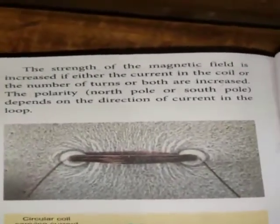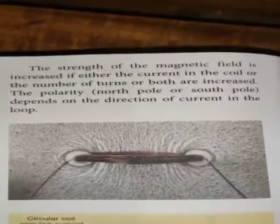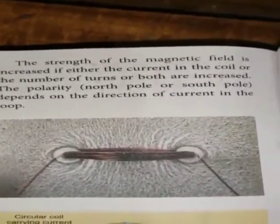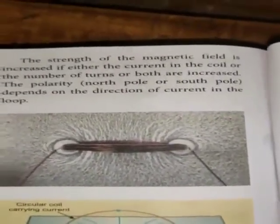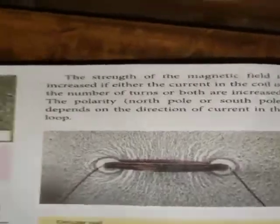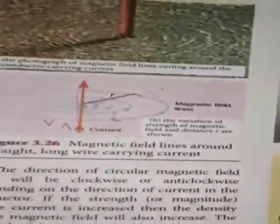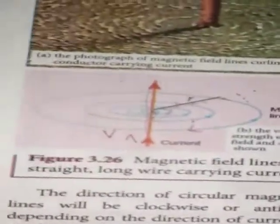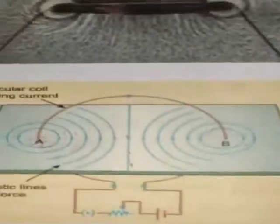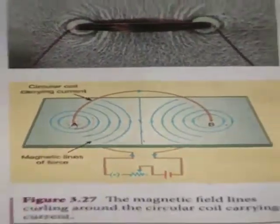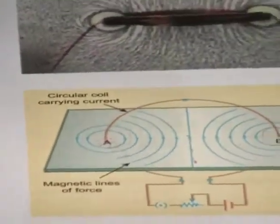The polarity depends on the direction of the current in the loop. There will be a north pole and a south pole. If the current direction is changed, the polarity will be changed — south pole and north pole interchange. So in a circular current carrying coil, the polarity can be changed by reversing the current.